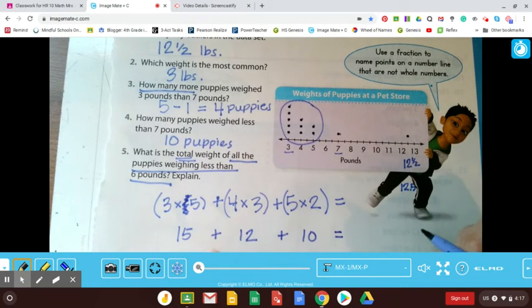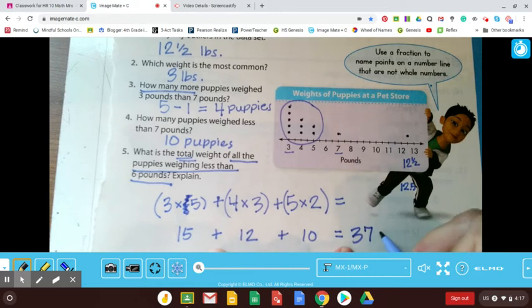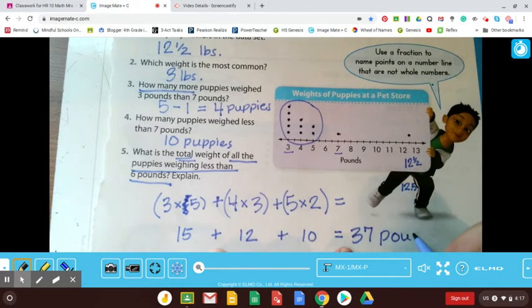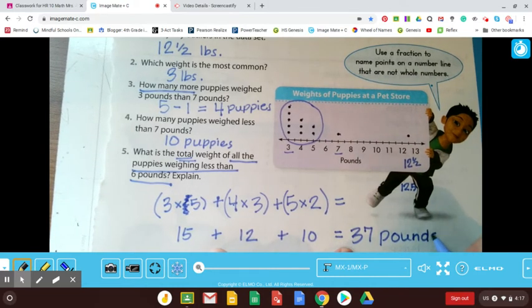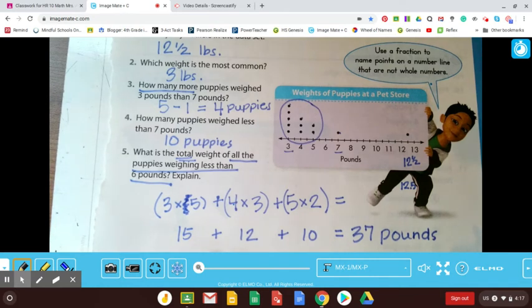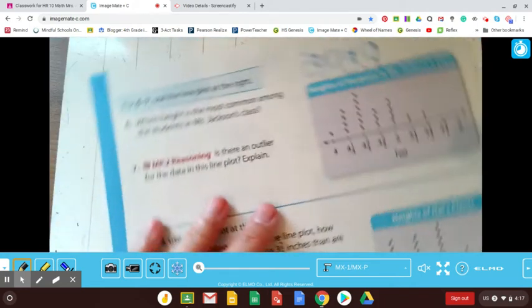And if I add that all up, what do I get? Let's see. I think it would be 37 pounds. All right. And so that would be the total weight of all the puppies that are less than six pounds. Pretty nice. All right, let's flip that paper over.